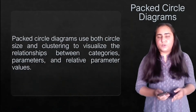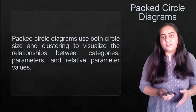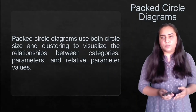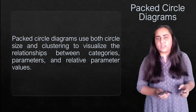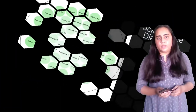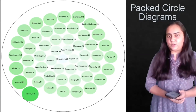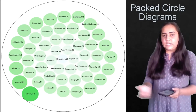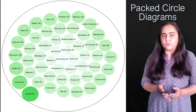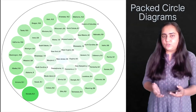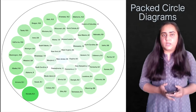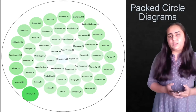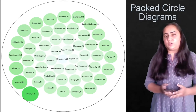Next we have packed circle diagrams. Packed circle diagrams use both circle size and clustering to visualize the relationships between categories, parameters, and relative parameter values. You don't just use size but also clustering. You can see how the colors and sizes differ and how they are clustered together, allowing comparisons based on cluster groupings.